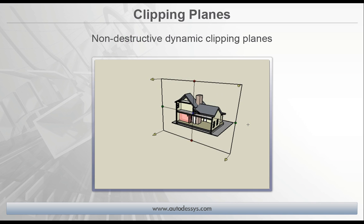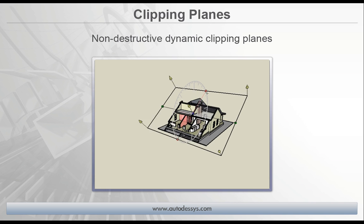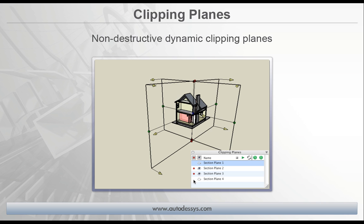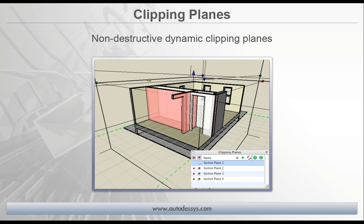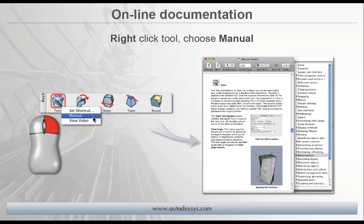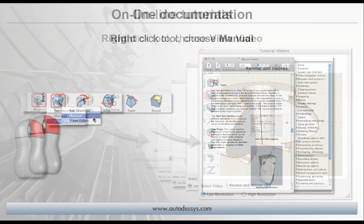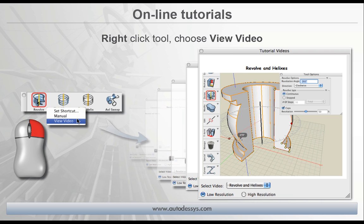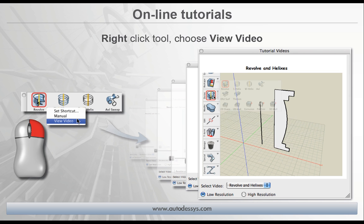Another new feature is the new non-destructive dynamic clipping planes. You can dynamically move them through your model, have multiple planes turned on at the same time, and still model inside those clipped areas. All the documentation is now online — simply right-click any tool and choose the manual option. We've also added numerous online video tutorials. Simply right-click any tool and choose the View Video option. These links contain hours of free video tutorials.